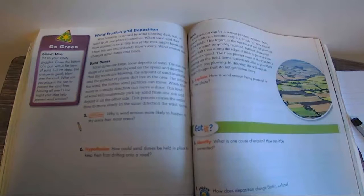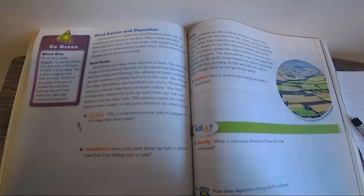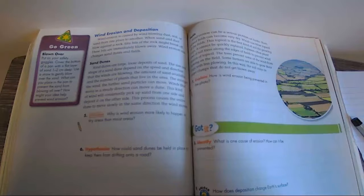Winds that move in a steady direction can move a dune. This kind of wind will consistently pick up sand from one side and deposit it on the other side. This process causes the entire dune to move slowly in the same direction the wind moves.